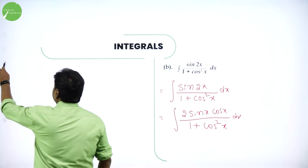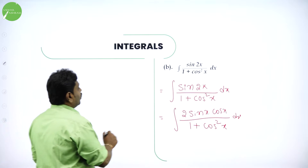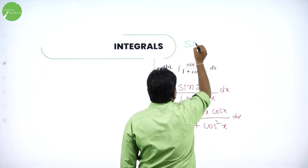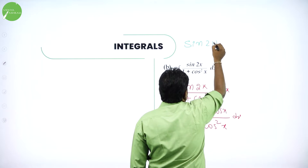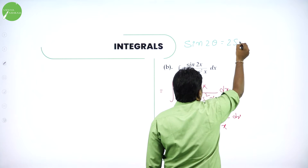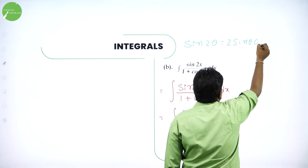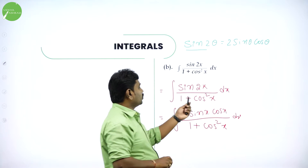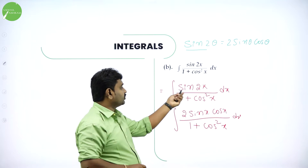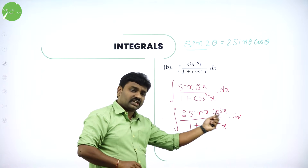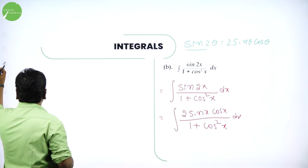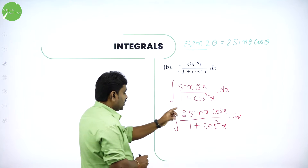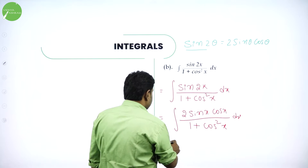So, first you should know the multiple angle formula. In trigonometry, in multiple angles, you have formula for sin 2 theta. Sin 2 theta in maths is 2 sin theta into cos theta. Remember sin 2 theta is 2 sin theta into cos theta. So, in spite of sin 2x, I am writing 2 sin x cos x. Now, you can observe: if I take t as cos x, I will get the remaining part called sin x.